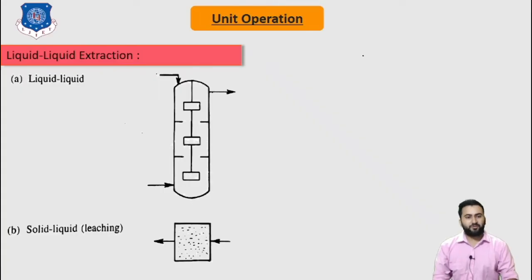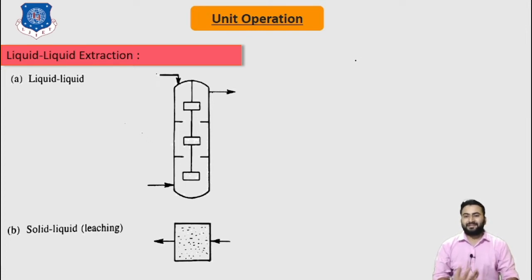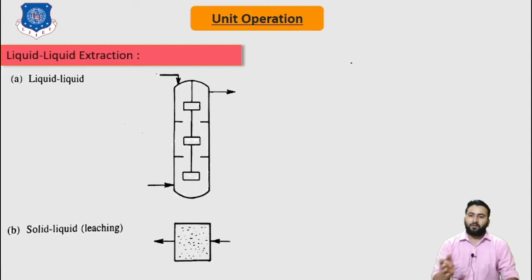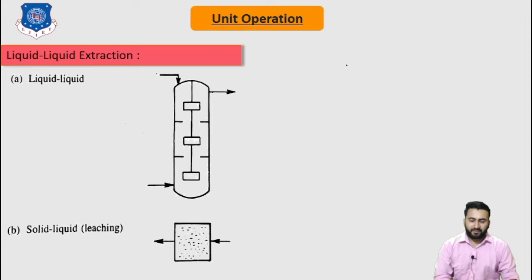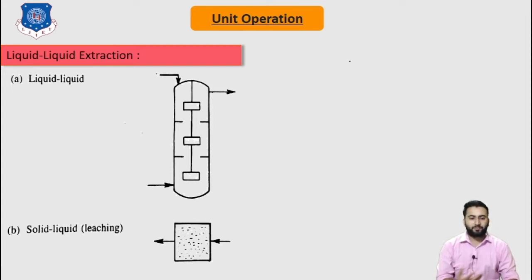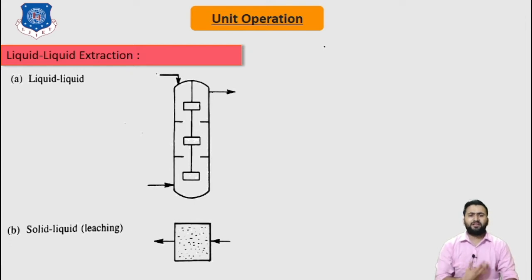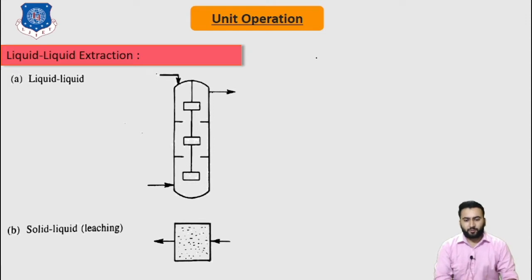Hello students, I am Jameen Pandya. In this lecture, we will discuss about the various schematic representations which are used in process flow diagrams for the manufacturing of chemicals. In the previous lecture, we discussed about the batch process and continuous process. So let's recall the batch process and continuous process.